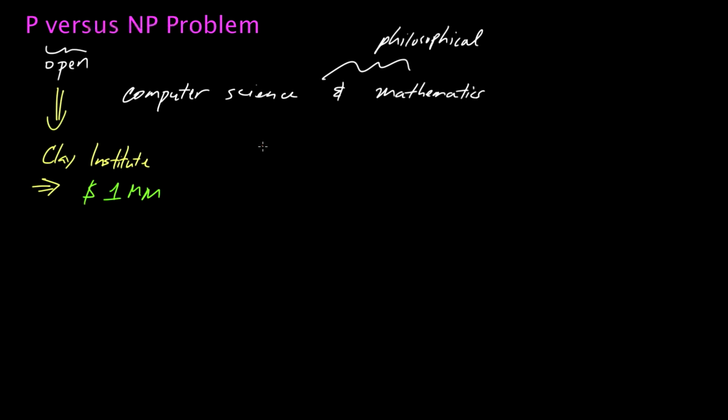Now, this problem of the P versus NP, this actually is a problem that belongs to a branch of computer science. In fact, it's a branch of computer science that intersects with mathematics, known as theoretical computer science. And within theoretical computer science, there's actually a sub-branch of theoretical computer science known as computational complexity theory, often just abbreviated as complexity theory.